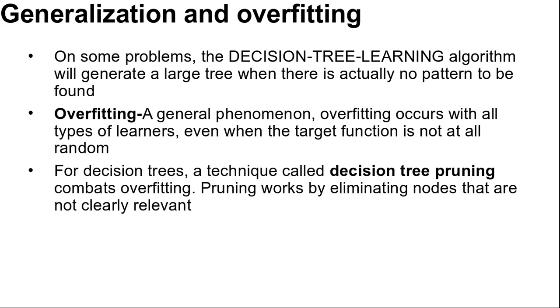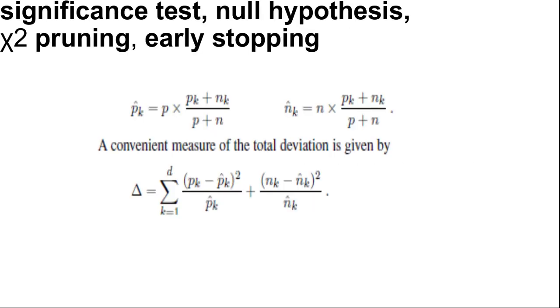We can answer this question by using a statistical significance test. Such a test begins by assuming that there is no underlying pattern, the so-called null hypothesis. Then the actual data are analyzed to calculate the extent to which they deviate from a perfect absence of pattern. If the degree of deviation is statistically unlikely, then that is considered to be good evidence for the presence of a significant pattern in the data. The probabilities are calculated from standard distributions of the amount of deviation one would expect to see in random sampling.